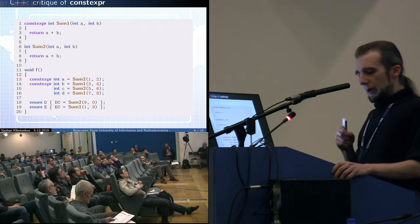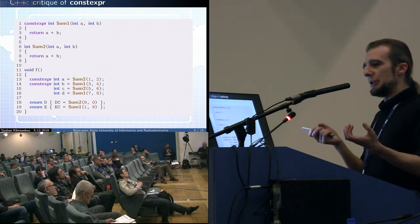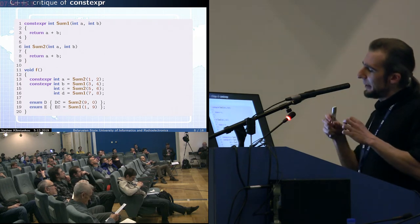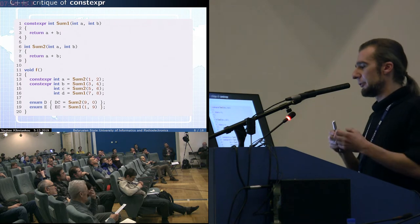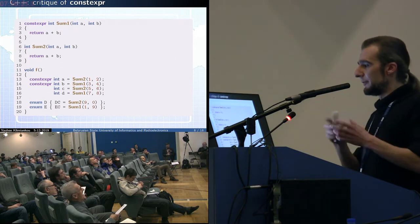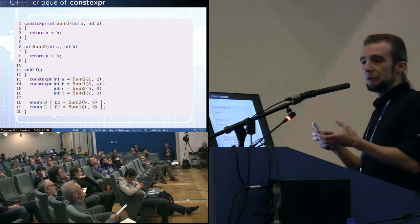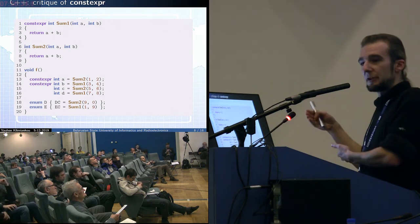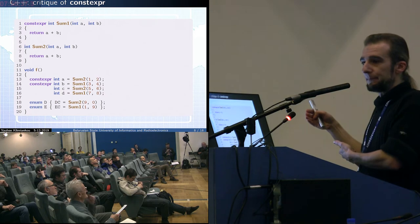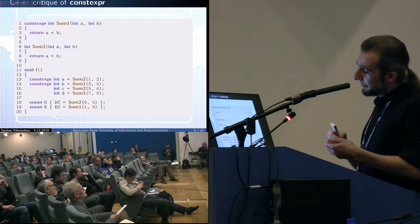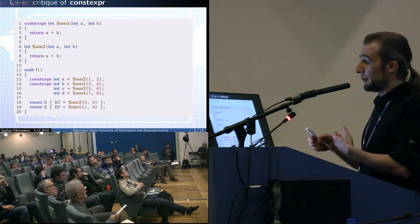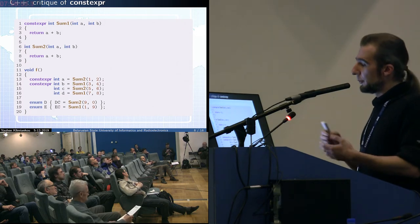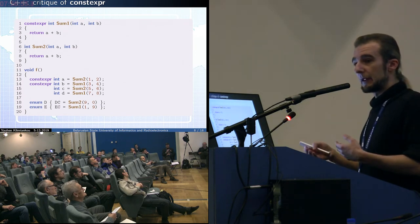There is a third big point: the constexpr specifier, whether present or not, does not impact function behavior. If the compiler ignores the hint and does not calculate SAM1 during compilation, putting the function call in instead, the correct value will still be returned. From the developer's perspective, there is no difference — the semantic function remains the same. Conversely, if the compiler decides to optimize SAM2 without constexpr, there is also no difference in outcome. The main point is that everything constexpr leads to is just a game about optimization.